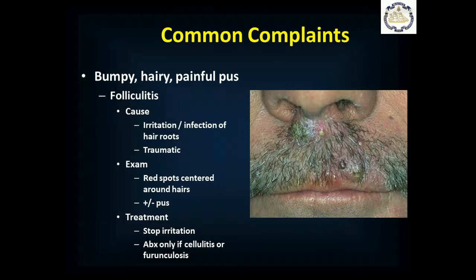People can get bumpy, hairy, painful pus pockets — folliculitis — which is irritation and infection at the hair roots, often caused by shaving or other traumatic causes. You'll see red spots centered around the hairs, sometimes with pus. Treatment is to stop the irritation. If there's a large surrounding area of cellulitis — red, hot, tender, and swollen — or an abscess is present, you may need antibiotics.